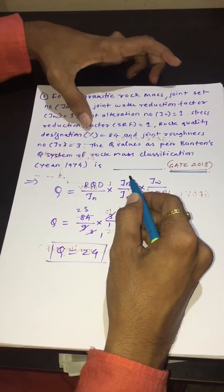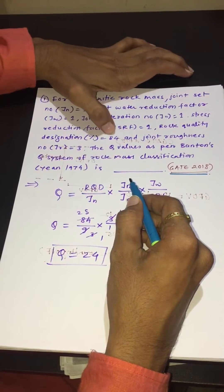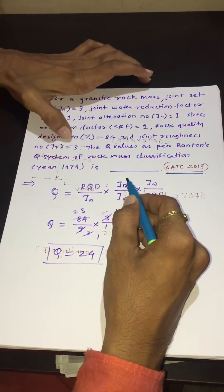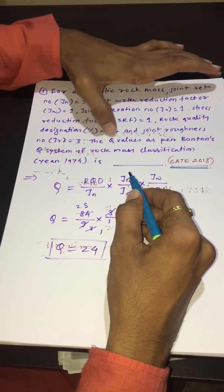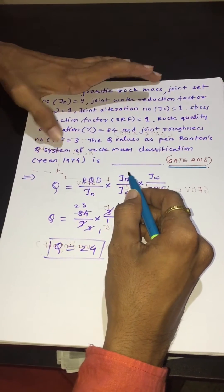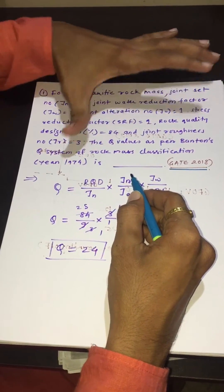Rock quality designation RQD percentage is 84 and joint roughness number Jr is equal to 3. The Q value as per Barton's Q system of rock mass classification year 1974 is to be found.